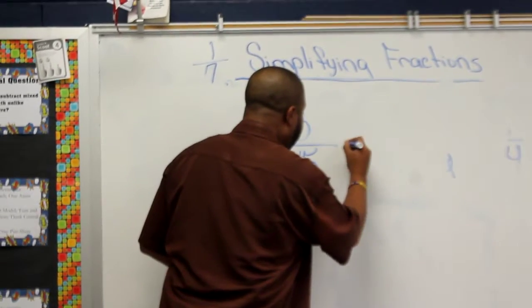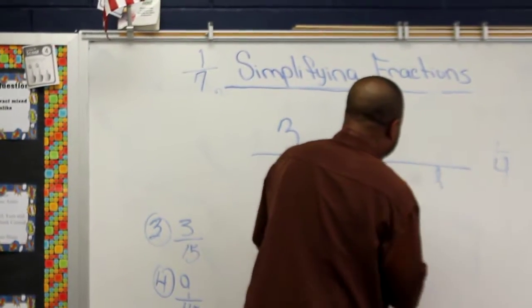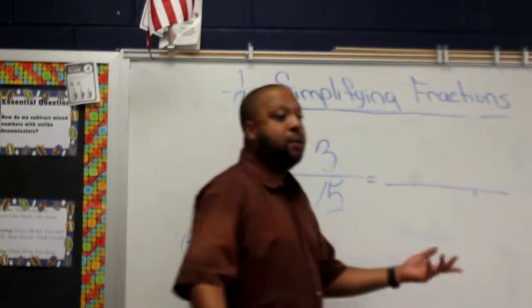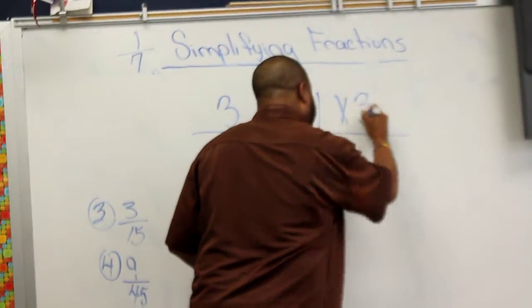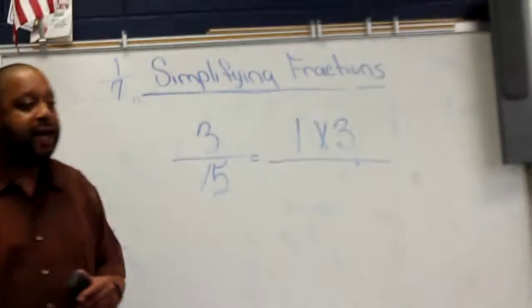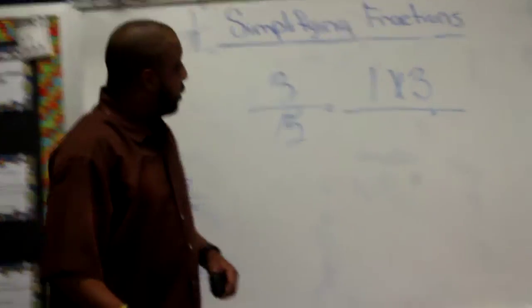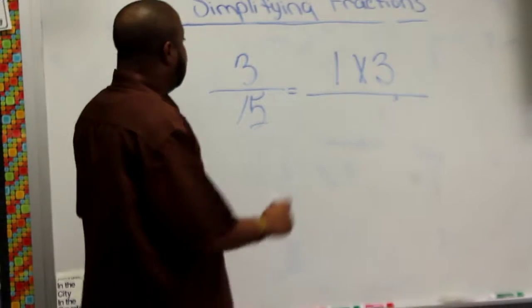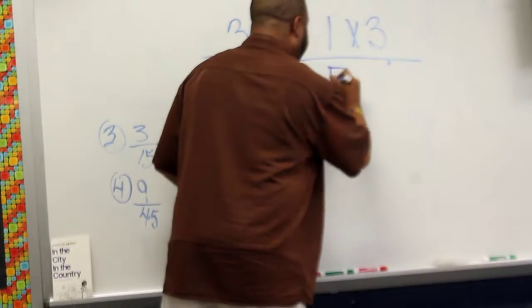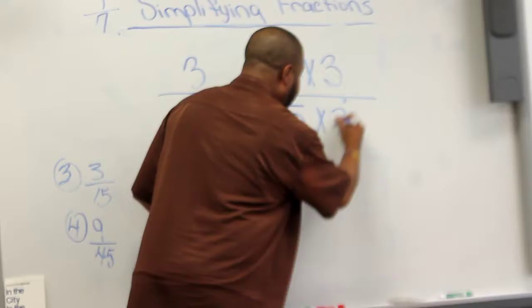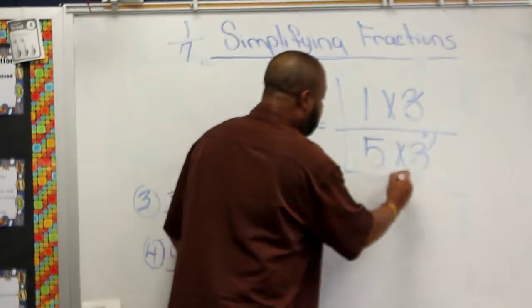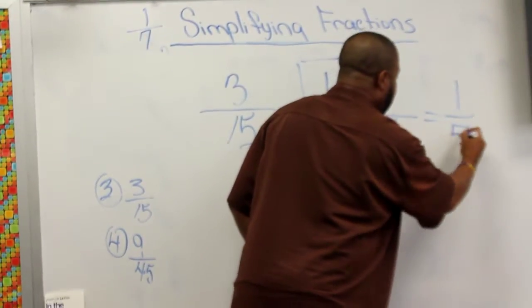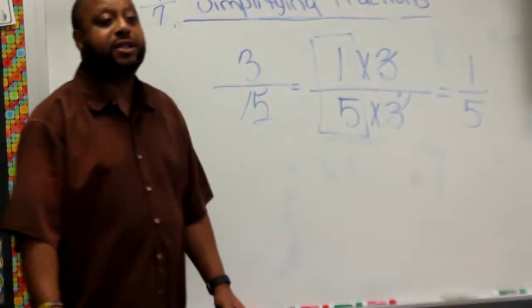3 over 15 equals — let's draw a fraction bar. Someone give me two factors for 3. 1 times 3. And someone give me two factors that give me 15. 3 times 5. What cancels out? 3. The 3 cancels out. What's left over? 1 over 5. Is it simplified boys and girls? Yes sir.